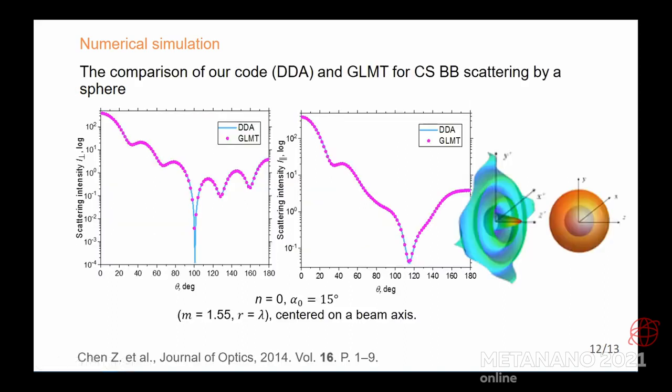We have tested our code with reference to the generalized Lorenz-Mie theory. Here you can see the comparison of scattering intensities in two planes for the case of the Bessel beam scattering by a coated sphere. As you can see, the results matched very well. It's validated our code. And now it's really easy for anyone to use the code for computing more complex cases of Bessel beam scattering.